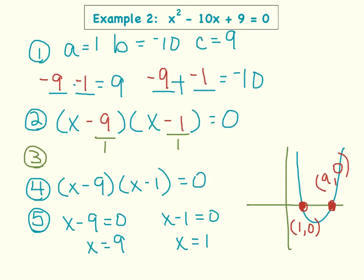This example of x squared minus 10x plus 9 equals 0. So in step number 1, first we must identify our a, b, and c of the equation. A is the invisible 1, the a term is always in front of x squared. The b term is the term in front of x, and you take the sign with it. So that would be negative 10. And then the c term is the constant, and in this case it's positive 9.